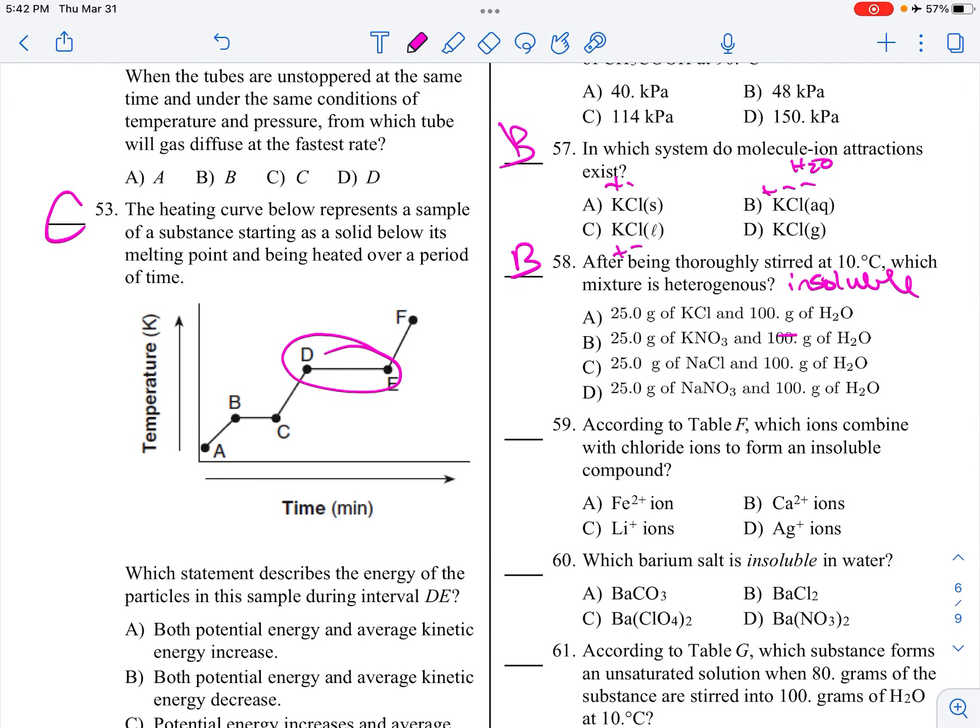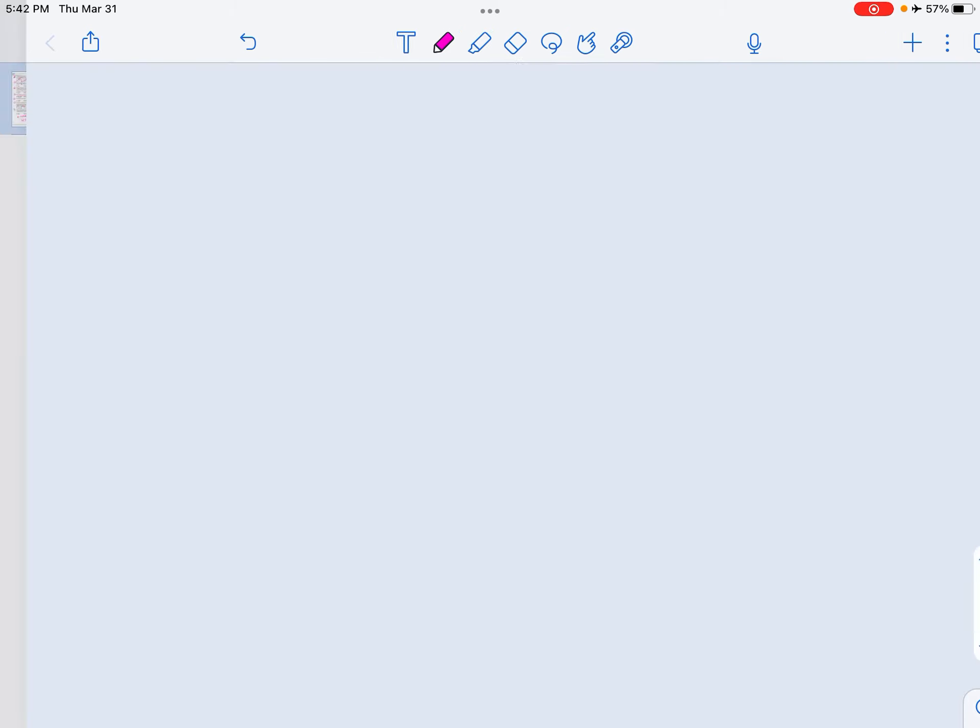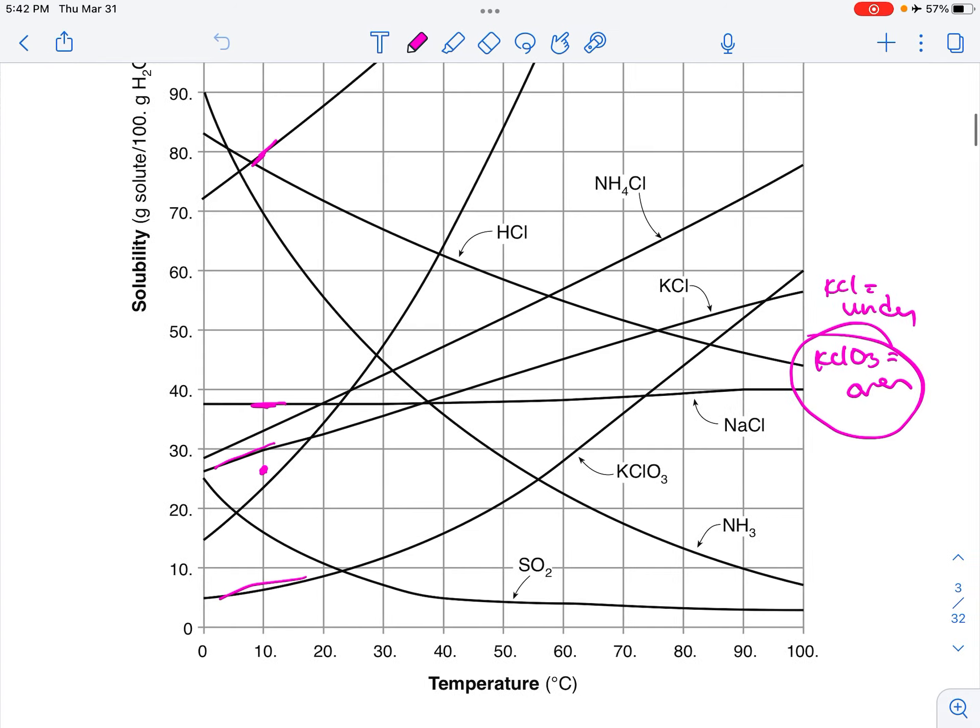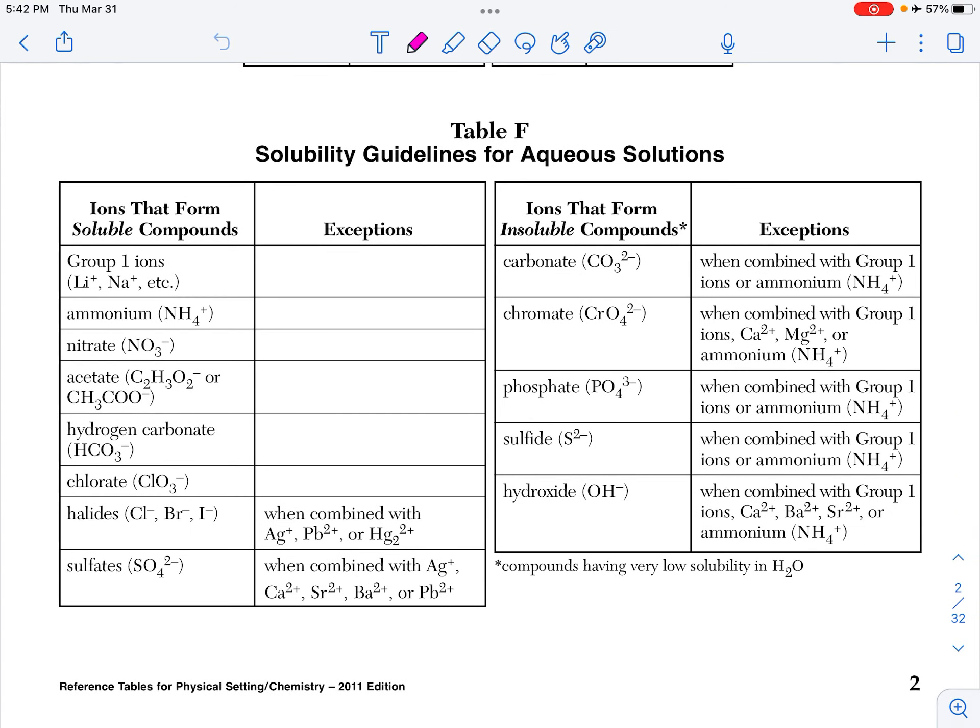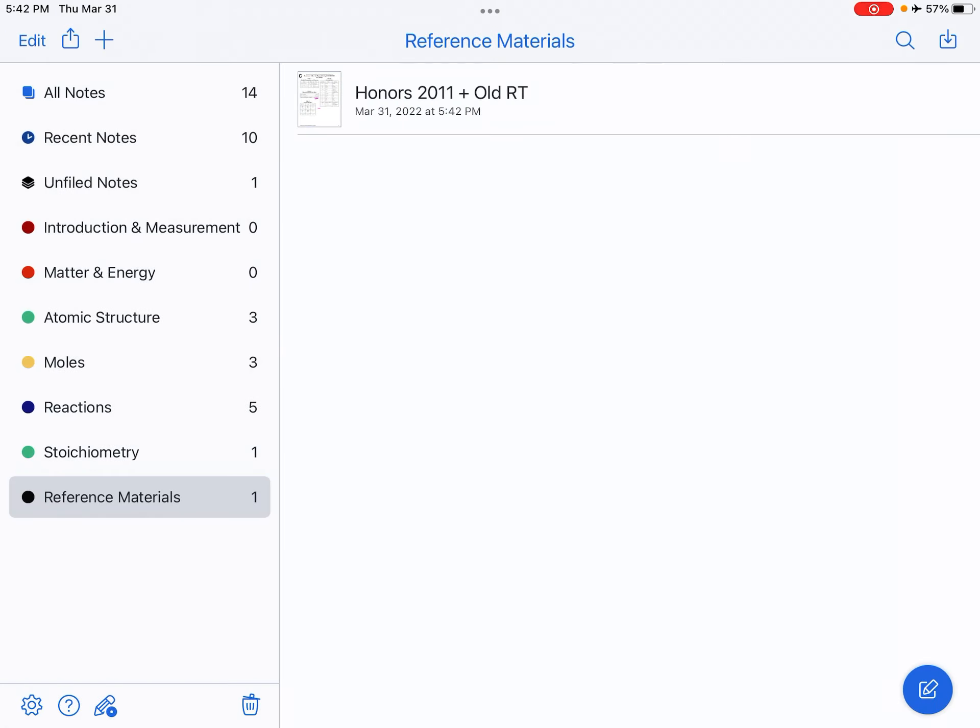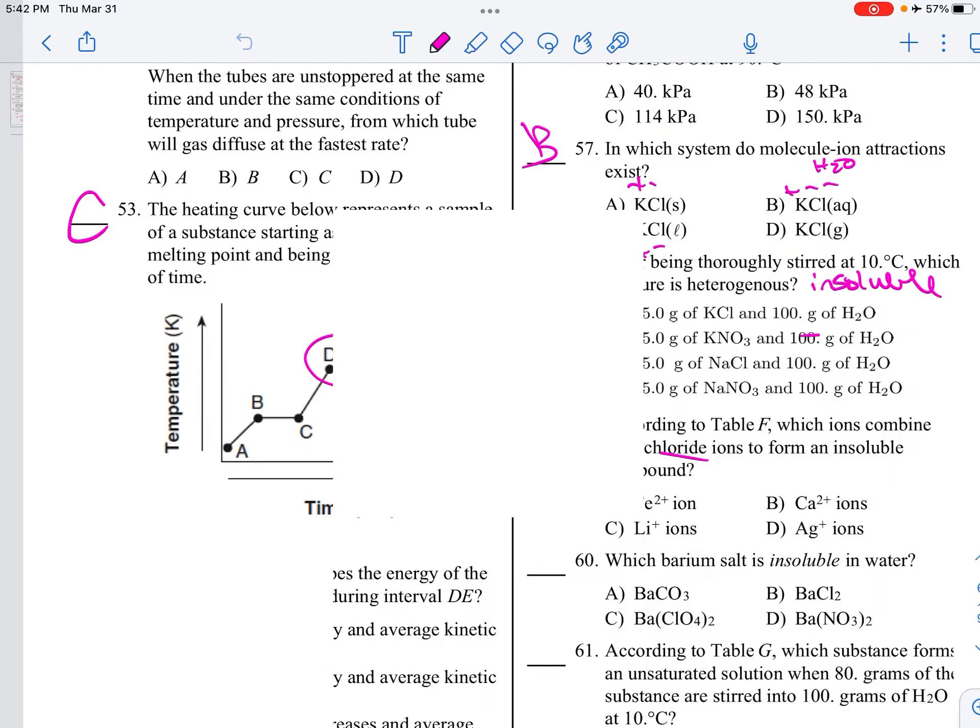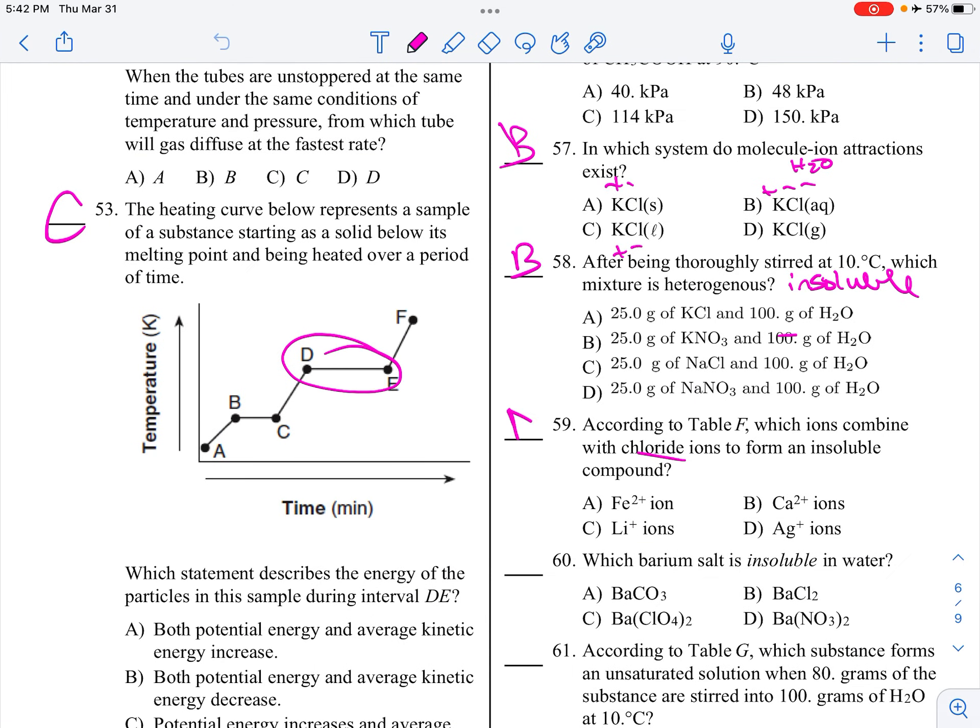According to Table F, which ions combine with chloride ions to form an insoluble compound? Iron, lithium, calcium, and silver. Let me go to Table F. Chloride is going to be soluble most of the time, except for with silver, lead, and mercury. So silver should be our answer, which is choice D for 59.